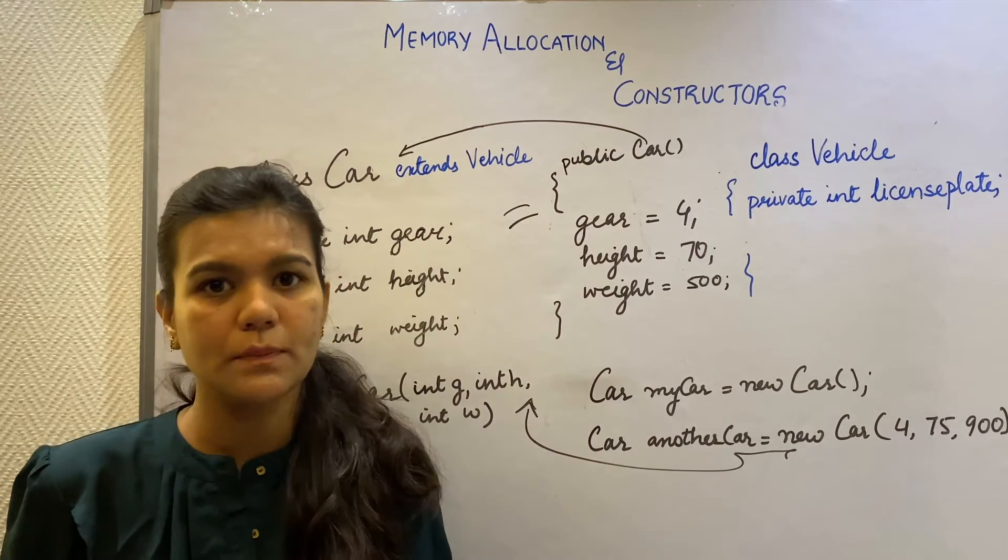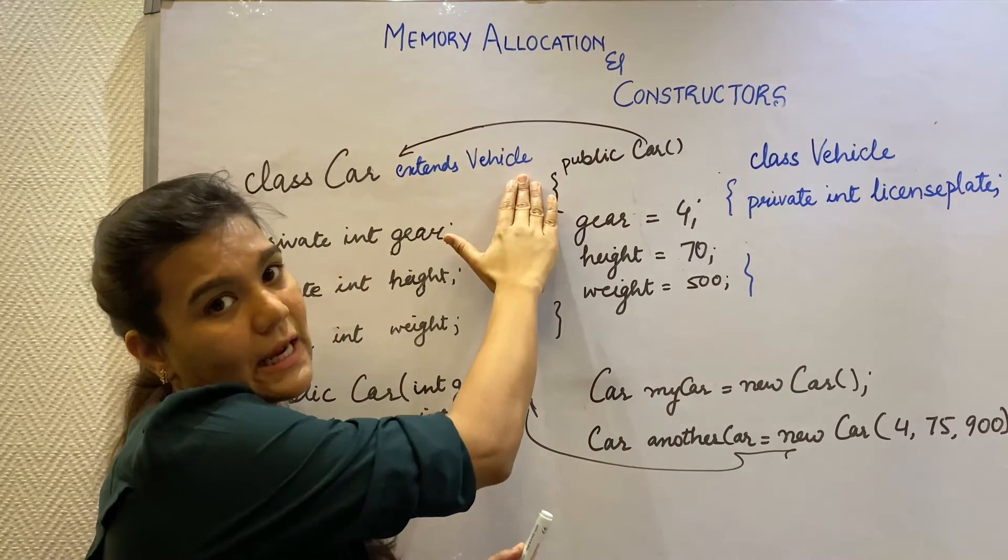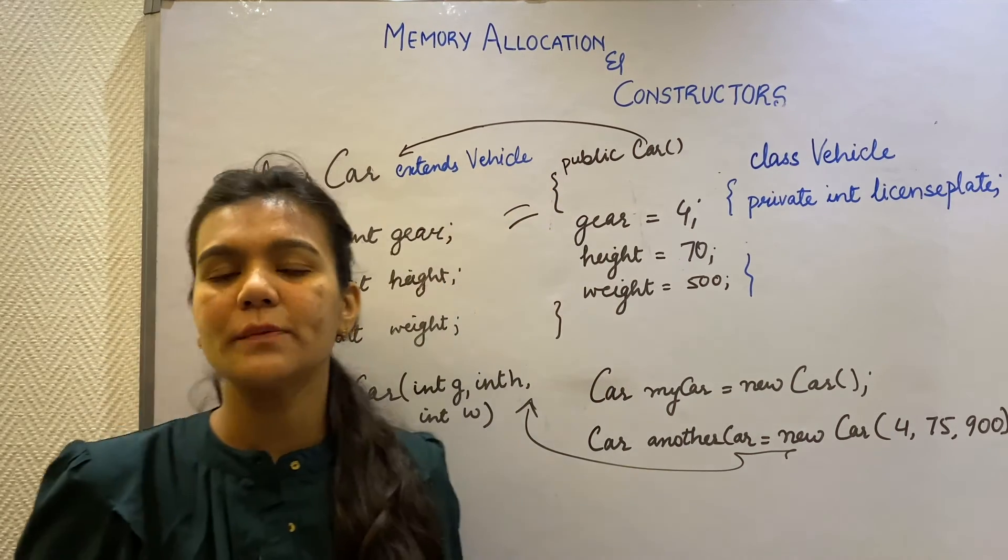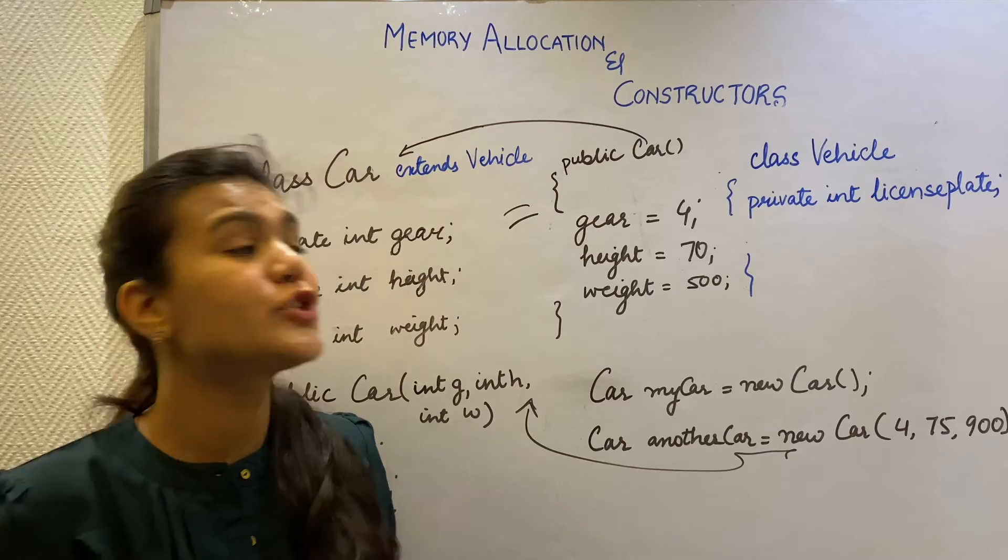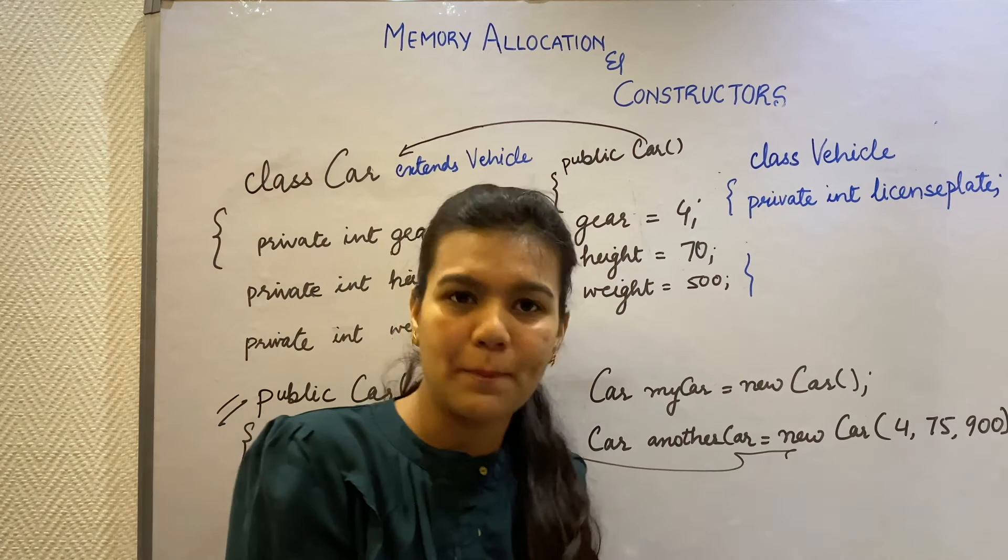We know here that there's a possibility that the car class is inheriting from the vehicle class. And the most important point about inheritance is that the child class object not only holds its own variables, but everything from its parent.